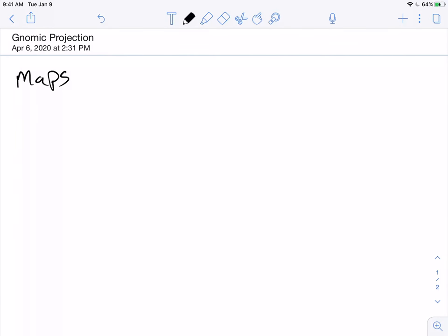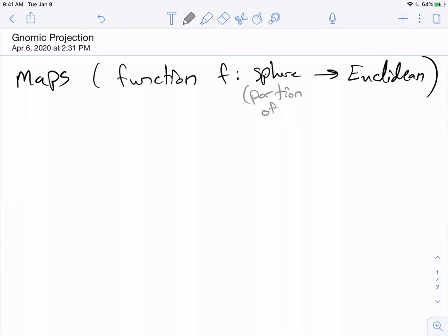And what I mean by a map is a function. So a map of the sphere would be a function f from the sphere to the Euclidean plane. I guess I would want it to be bijective, or bijective at least where it's defined. So it might be defined on the sphere or maybe on some portion of the sphere, this may be the domain, to the Euclidean plane.